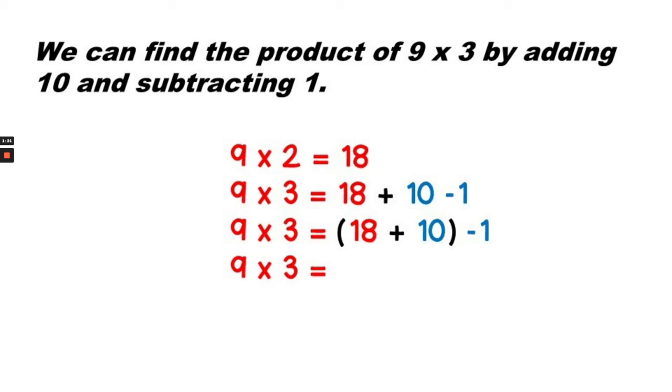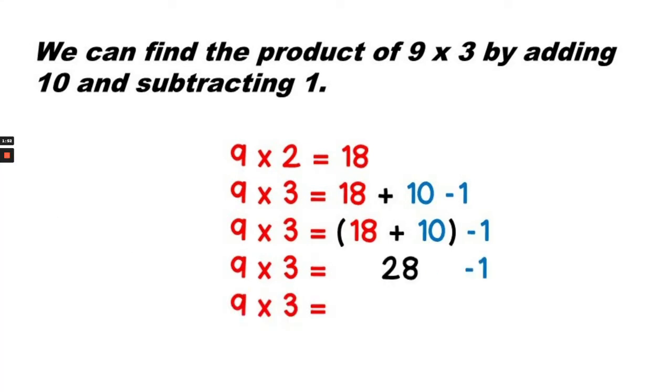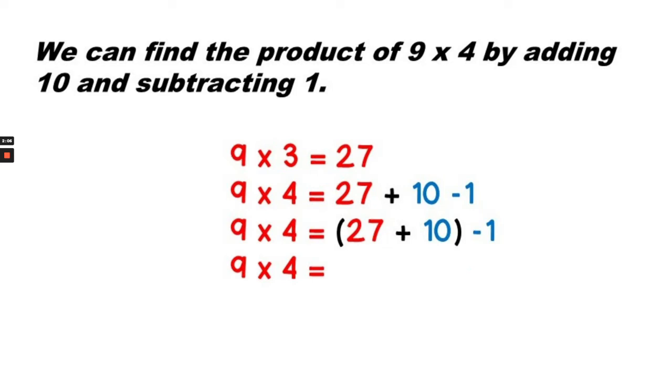We can find the product of 9 times 3 by adding 10 and subtracting 1. So 9 times 2 equals 18. 9 times 3 equals 18 plus 10 minus 1. That is 18 plus 10 minus 1, or 28 minus 1. 9 times 3 equals 27.